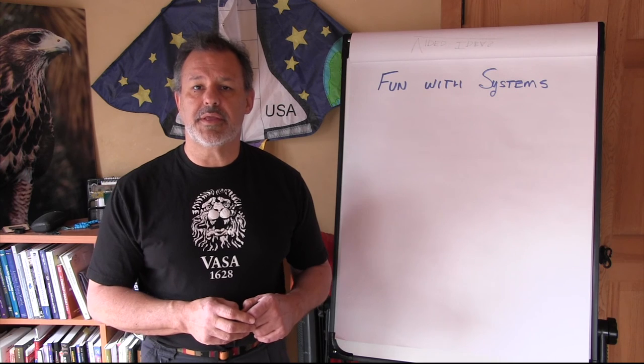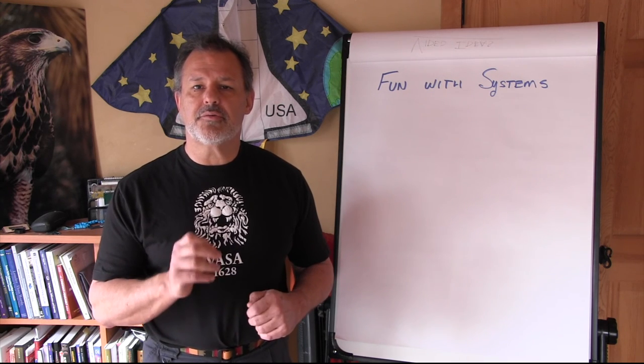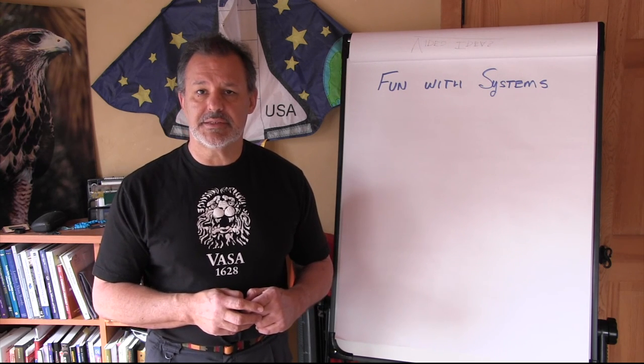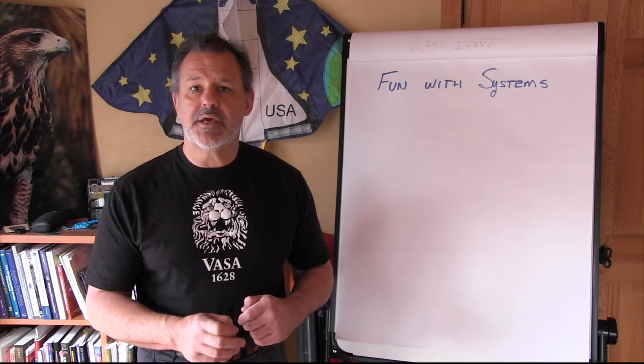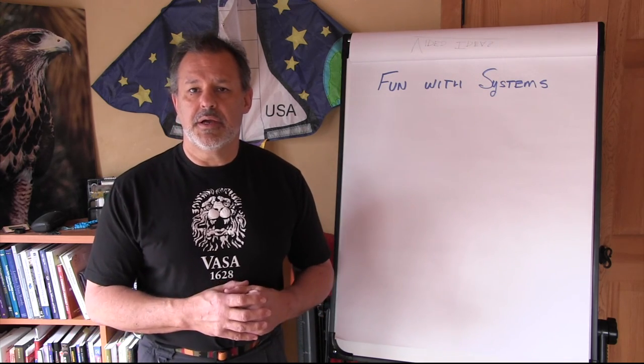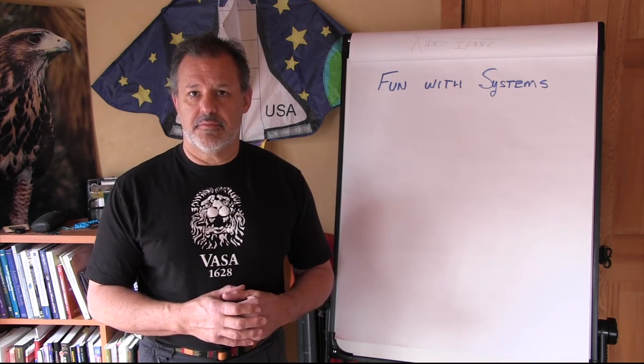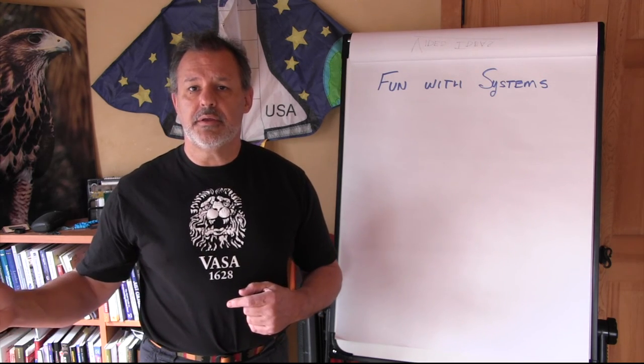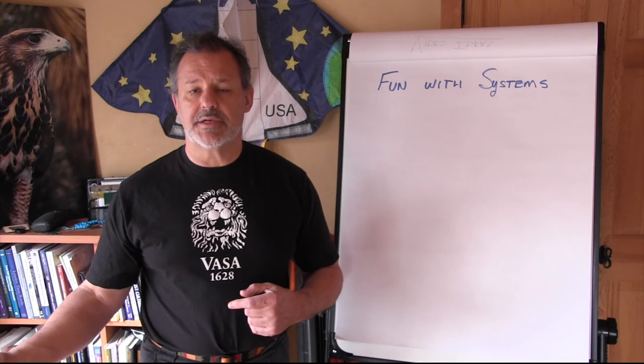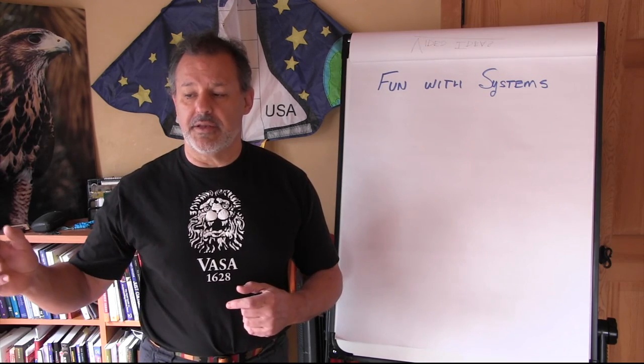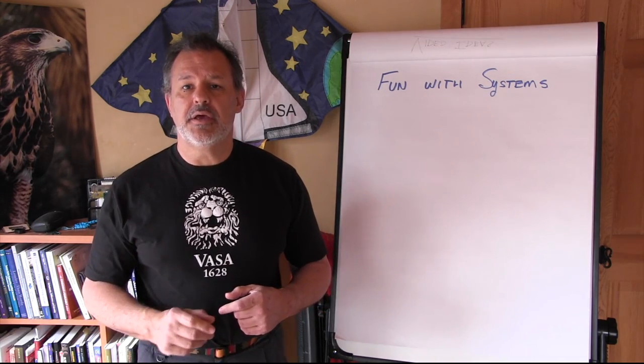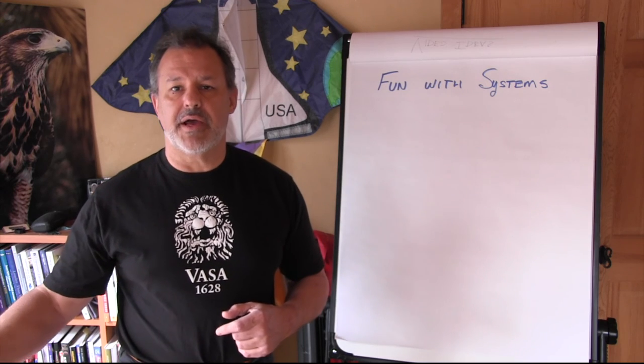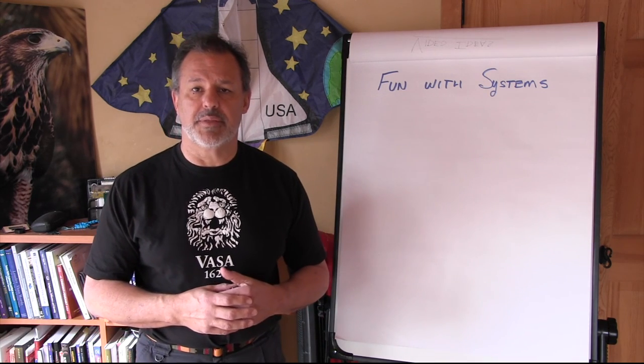We don't necessarily know what the outcome is going to be, because here's the really, really freaky thing about complex systems. Complex systems can have an infinite number of outcomes. So for every action, there isn't a simple, this is the set of reactions. There isn't a simple set of a single action. There is an infinite number of outcomes from a single input to a complex system.